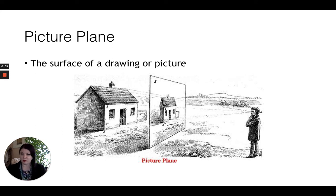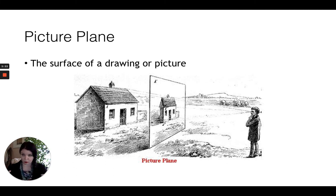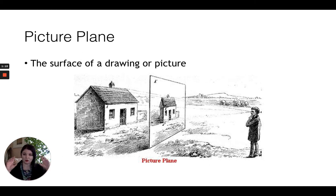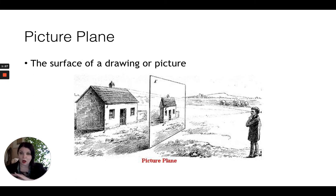We're going to go through some terms that relate to this. One is the picture plane. The picture plane is the surface of a drawing or picture. When we're translating something that exists in the world — a three dimensional thing or a three dimensional space that you can enter — we have to think about its relationship to the picture plane when we are translating that image into a two dimensional flat depiction on a surface, in our case in our sketchbooks.